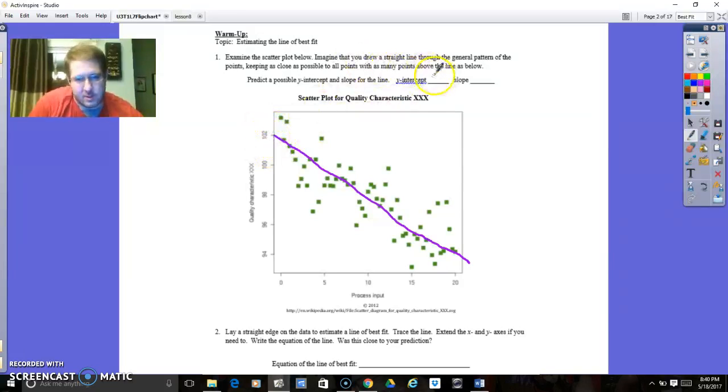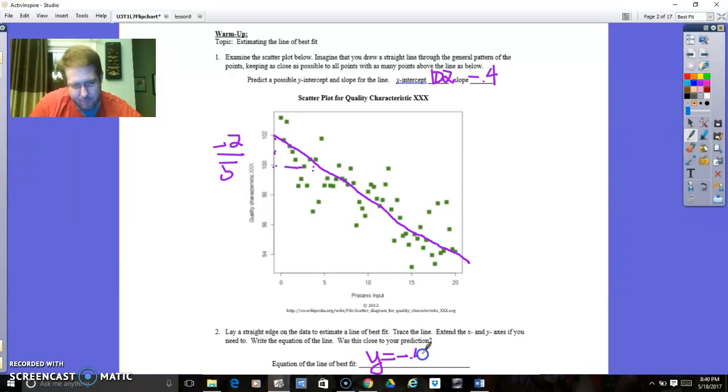Now, it looks like in this case, a y-intercept would be about 102, and it looks like it's going down 2 for every right 5. Down 2 for every right 5 would be a slope of negative 2 over 5. Now, I'm going to change that from a fraction into a decimal. Negative 2 divided by 5 is the same as negative 0.4.